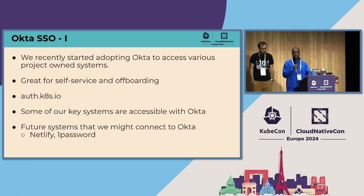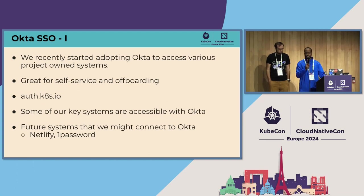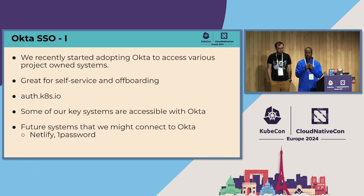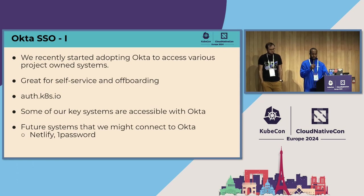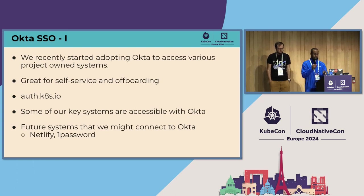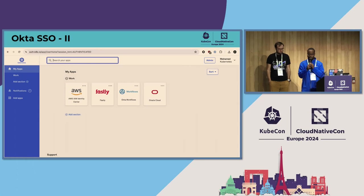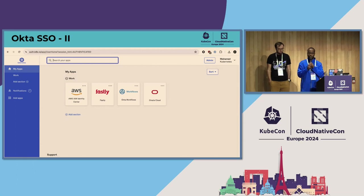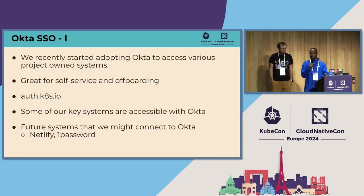On Okta SSO: we have access to a lot of services from different vendors — enterprise products that use enterprise identity. Okta was generous enough to give us access to their IDP so we can onboard and offboard contributors to these services very easily with minimal work. We've deployed this, there are a couple of services already accessible, and I need to add additional services and roll this out to the wider Kubernetes community.